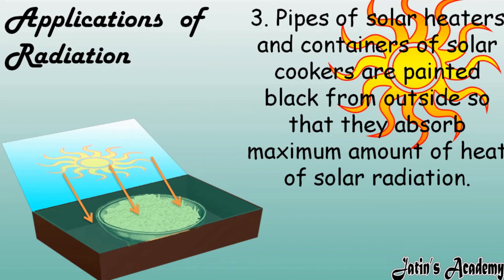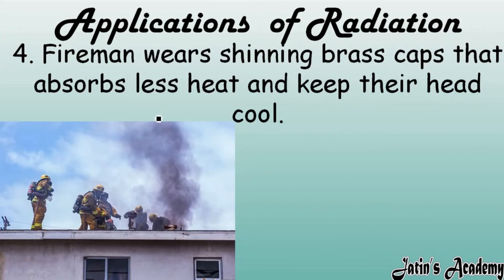The third application: pipes and containers of solar cookers are painted black from outside. Solar cookers work on the basis of sunlight, and to work properly they need to absorb as much sunlight as possible. The black color helps absorb more and more sun radiation into the solar cooker, so whatever is inside the solar cooker can cook properly.